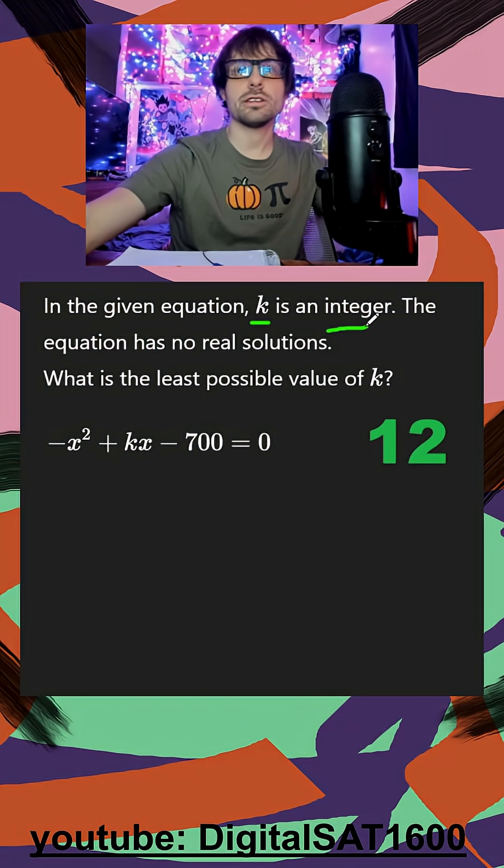In the given equation, k is an integer, that's really helpful. The equation has no real solutions. So I see it's a quadratic. No real solutions just means no decimals. I don't want it to intersect our x-axis, right?